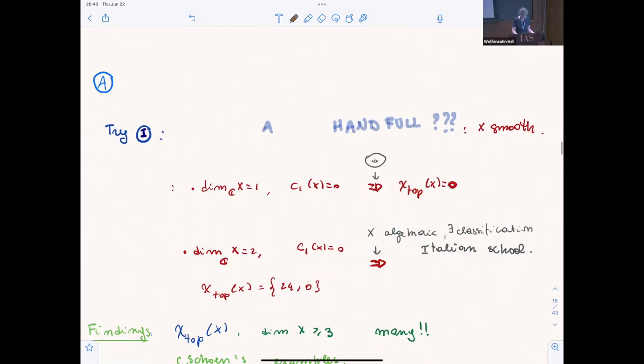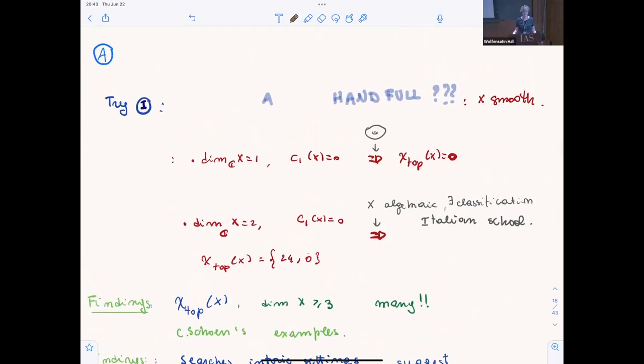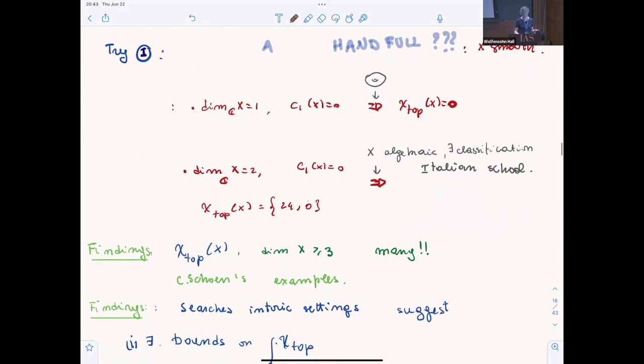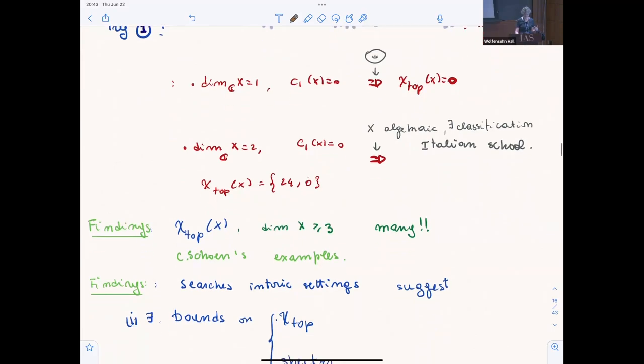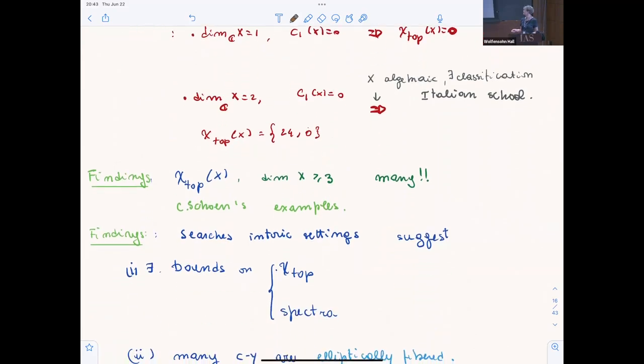But it turns out Schoen, in the late 80s, two years later, produced papers with a lot of topological Euler characteristics. He built an example which gave a wide range in a very big interval. Beauville reviews the paper in MathSciNet and says, unfortunately for the physicists, et cetera.